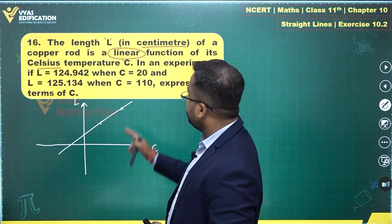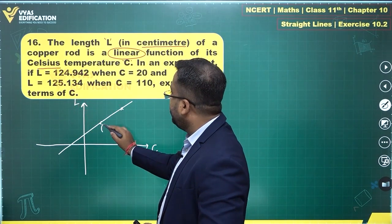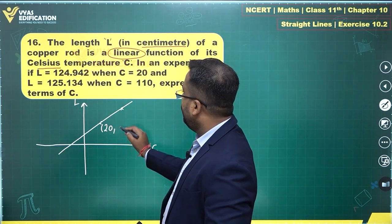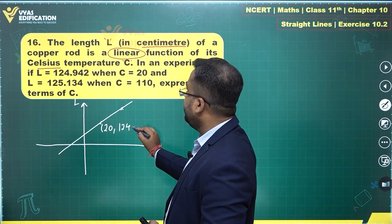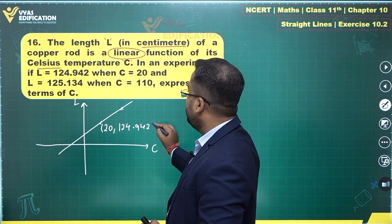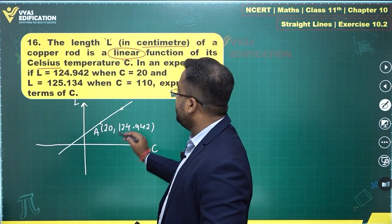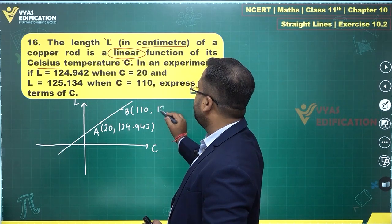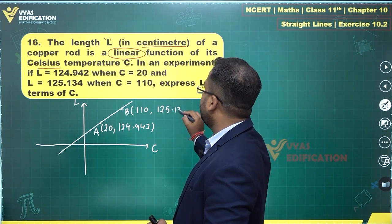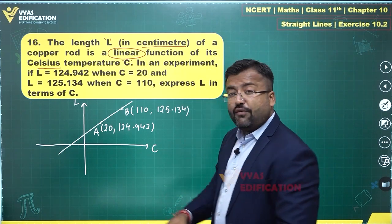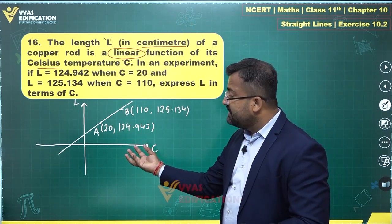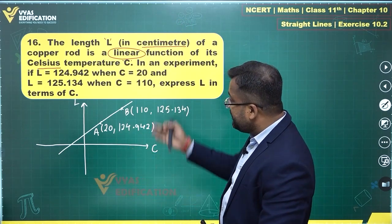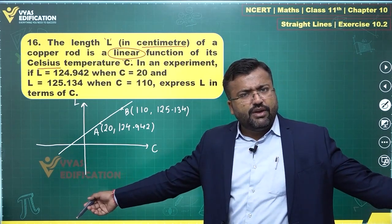C is on the X axis, so the first point will be 20, 124.942. This is point A. Let's see. The other point B will be 110, 125.134. Now you have converted that whole problem into this graph now, and you can easily solve this graph because that's what we have been doing for so long.